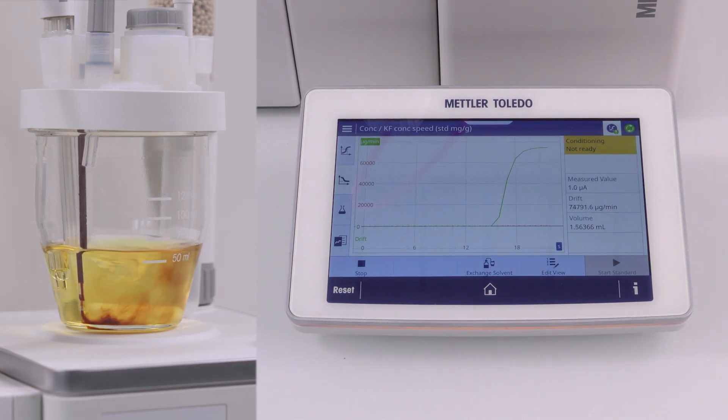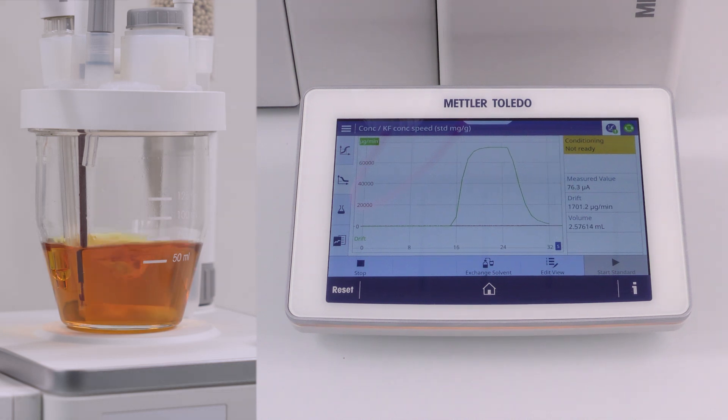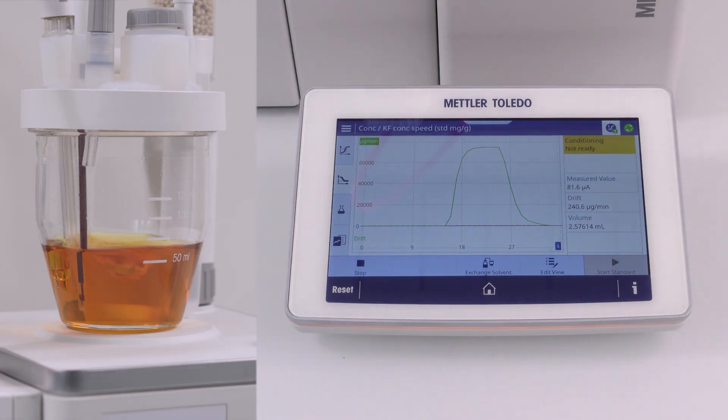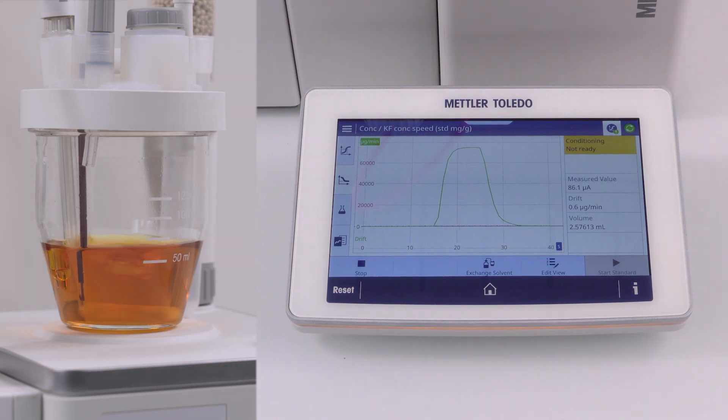The concentration determination adjusts the nominal concentration to the actual one and corrects all the systematic errors of the measuring system. Ultimately, the actual concentration of titrant determines the accuracy of the sample measurement that we do afterwards. Thus, it is very important to do it frequently and accurately. I suggest you to do it at least once per measuring day.